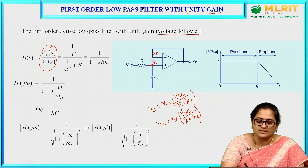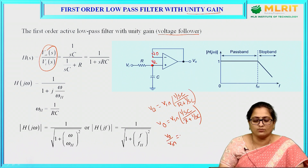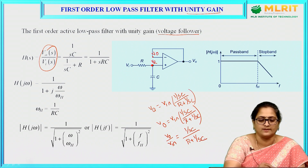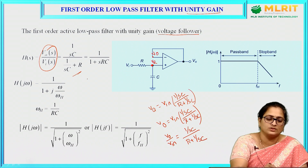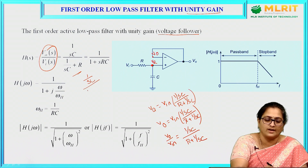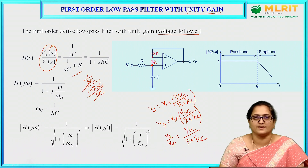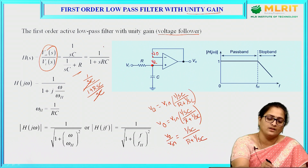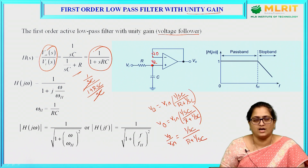The transfer function is the ratio of V naught by Vin. You can write V naught by Vin as (1/sC) divided by (R + 1/sC). Solving this, you get 1 divided by (1 + sRC), as the sC terms in the denominator cancel out.